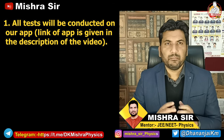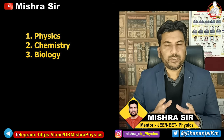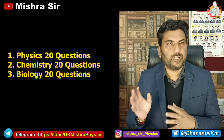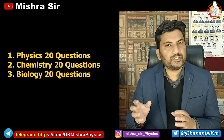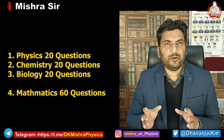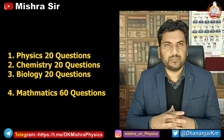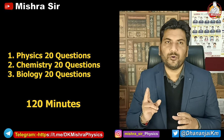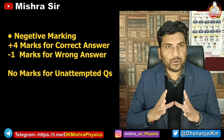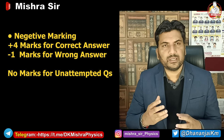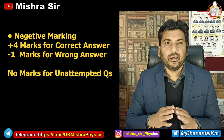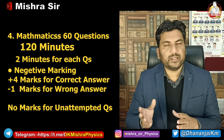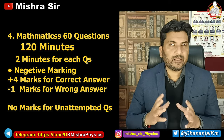At the micro level: physics, chemistry, and biology — which together form science — will have 20 questions each, giving 60 questions total. Mathematics will have 60 questions. That means 2 minutes per question. There will be negative marking: plus 4 marks for a correct answer and minus 1 mark for a wrong answer. Unattempted questions carry no marks. The same marking scheme applies to mathematics — plus 4, minus 1, 60 questions, 2 hours.